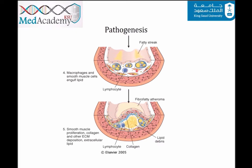Thrombocytes, macrophages, and cells in the vessel wall release factors that recruit smooth muscle cells from the media layer to the intima. The smooth muscle cells also contribute to phagocytosis of lipids via scavenger receptors, resulting in smooth muscle cell-derived foam cells. The smooth muscle cells also proliferate and produce fibrous tissue, resulting in the creation of a fibrous plaque, with key features of intimal thickening and lipid accumulation.